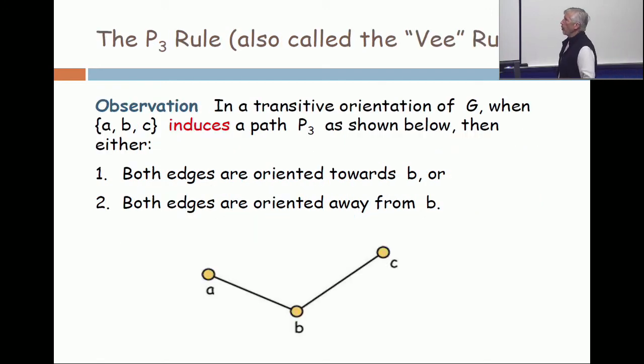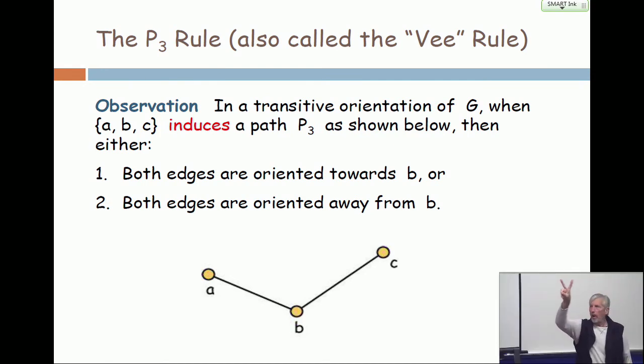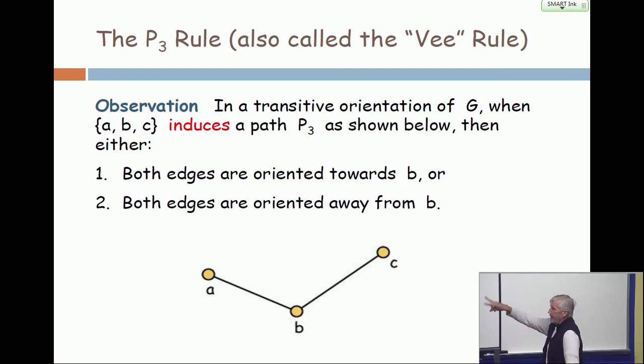So here's how the algorithm works. It's so simple. It's called the P3 rule or V rule. The letter V in the English alphabet looks like this. So when you see a V, like A, B, and C,